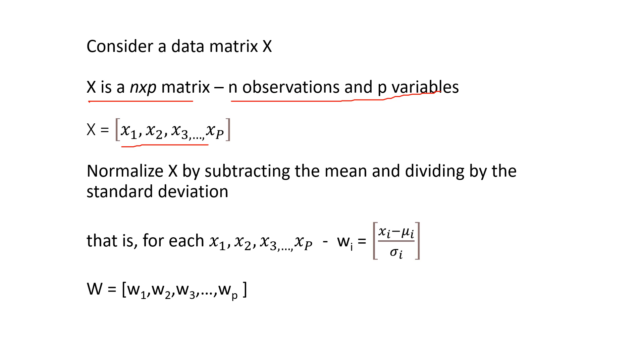We normalize X by subtracting the mean and dividing by the standard deviations. So for each Xi we take the mean mui and the standard deviation sigma i, and we subtract the mean and divide by the standard deviation to get the new matrix W, which is the normalized form of the matrix X.